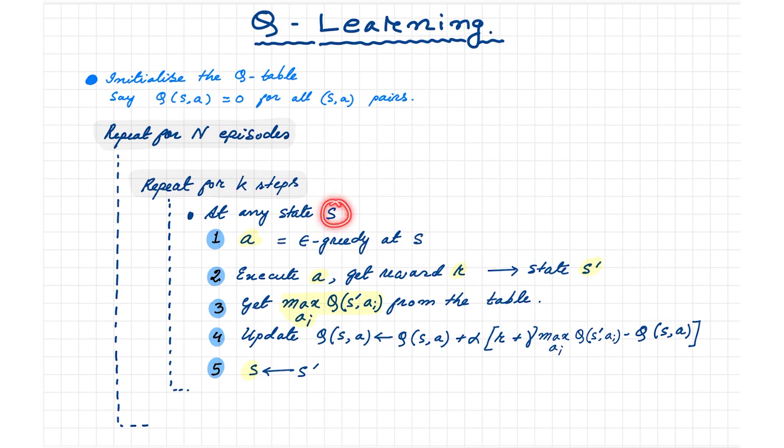At any state s, first we query the epsilon greedy policy. Then we apply the action and observe the reward and the next state s′. Then we update the old Q value for the previous state in the Q table using the Q-learning update rule.